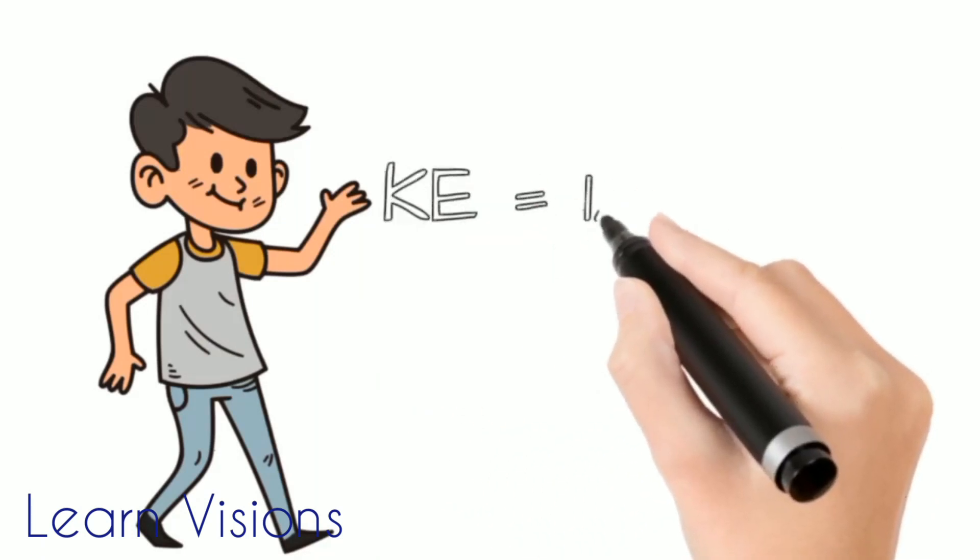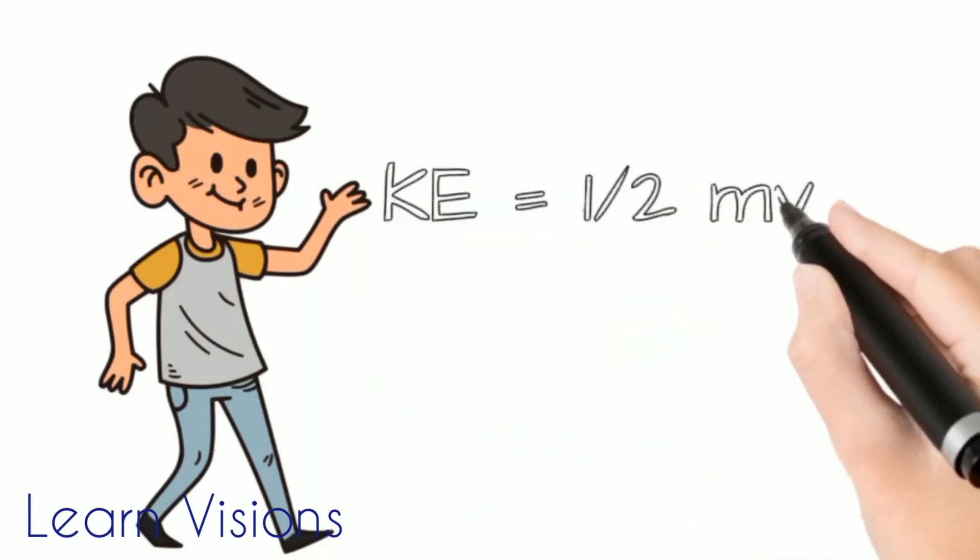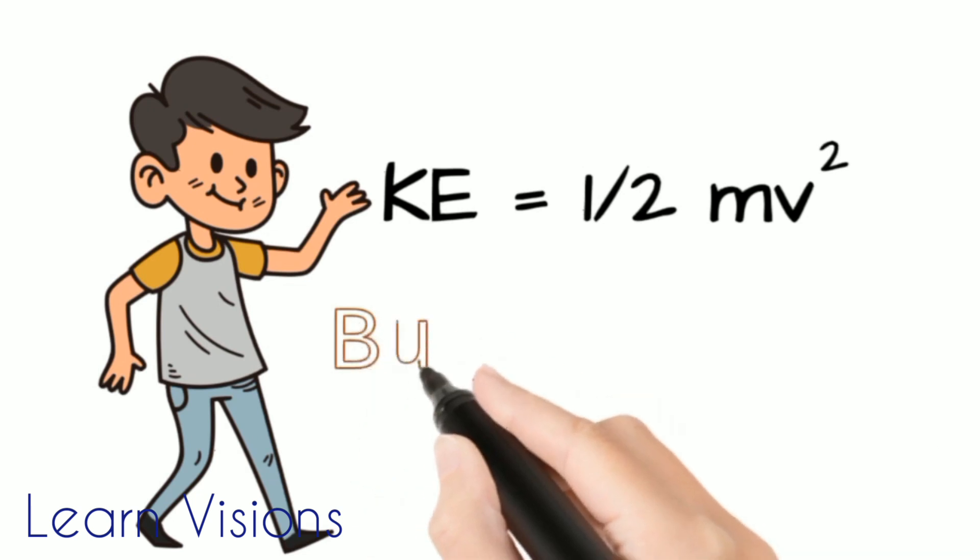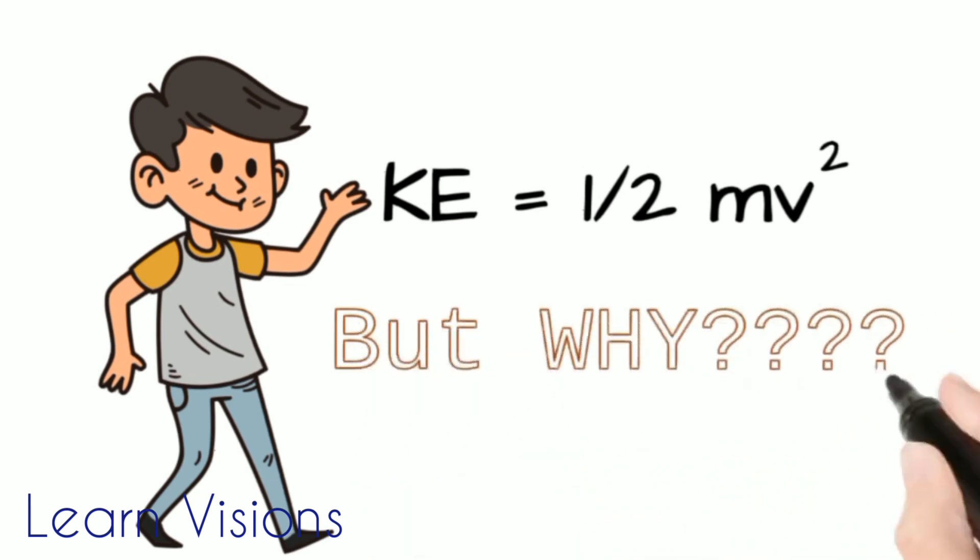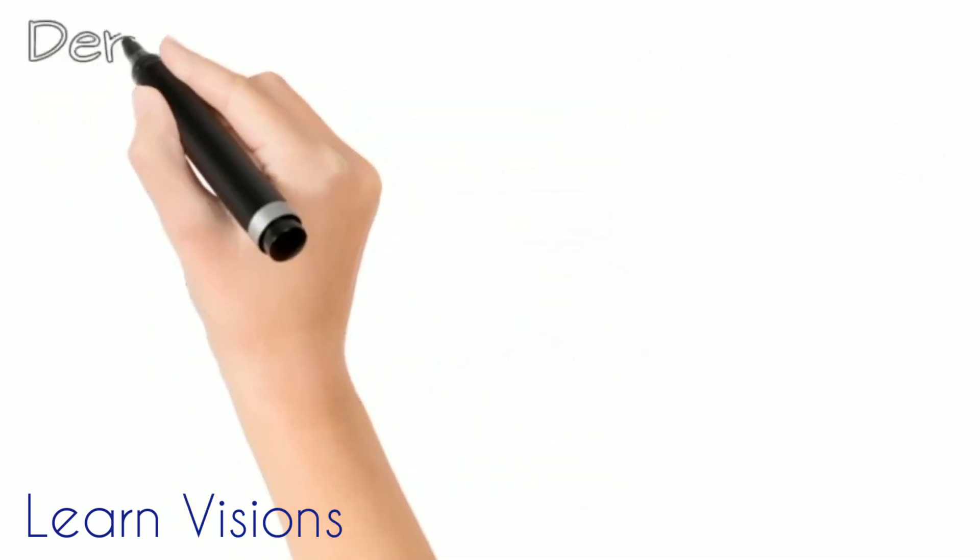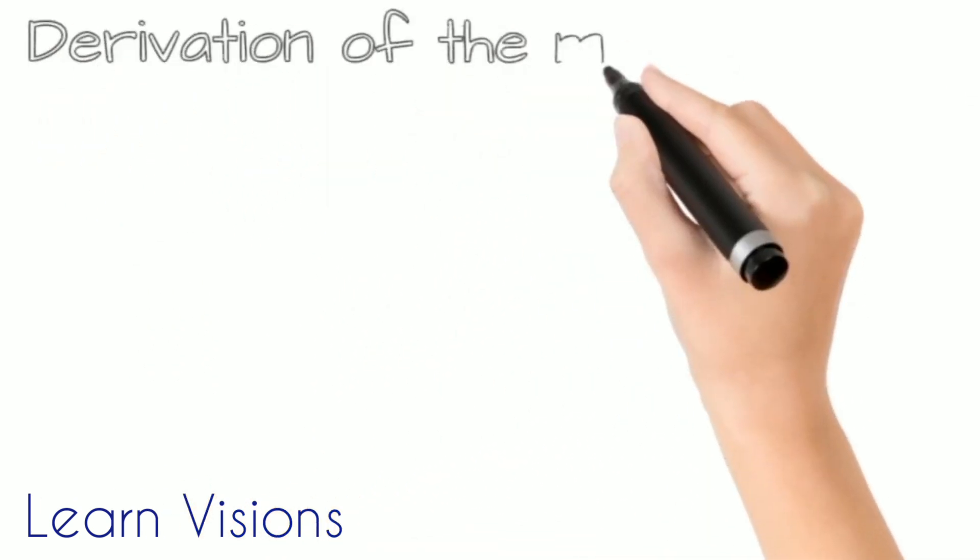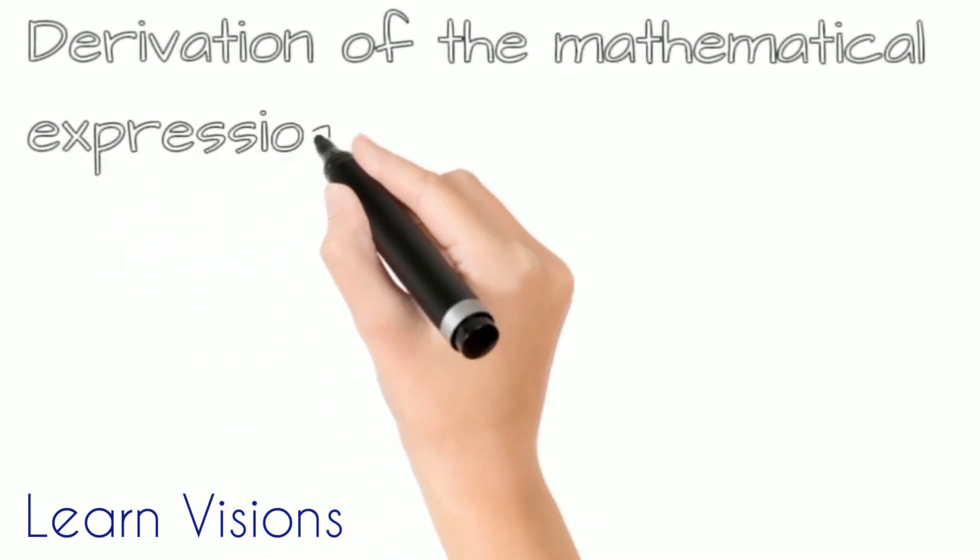We know that the kinetic energy is equal to half mv squared. Do you know why? In this video we will see the derivation of the mathematical expression of kinetic energy.